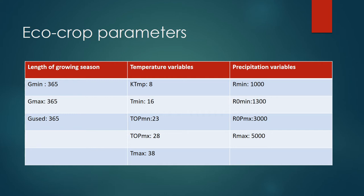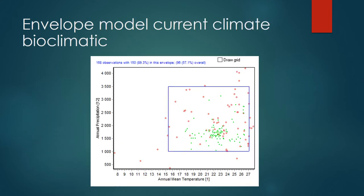This is the Köppen climate classification as explained earlier. The areas in blue are associated with a suitable climate for the wild banana crop, along the tropical belt.